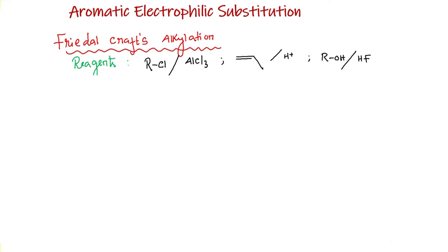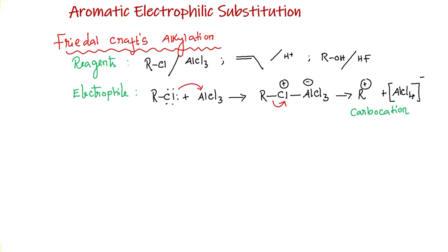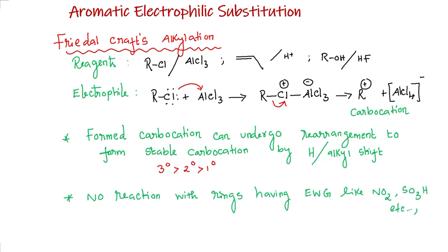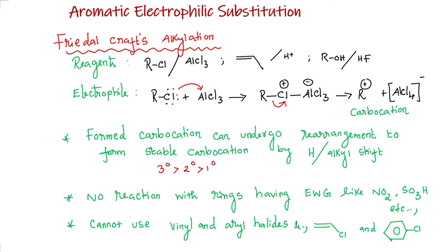For Friedel-Crafts alkylation, we generally use alkyl chlorides in the presence of anhydrous aluminum chloride. We can also perform alkylation using alkenes in the presence of acids, and alcohols in the presence of HF. All these reagents will form alkyl carbocations. When aluminum chloride reacts with alkyl chloride, it polarizes the R-Cl bond and forms a complex which dissociates to form the carbocation. The formed carbocation can undergo rearrangement to form a more stable carbocation by hydrogen or alkyl shift. The tertiary carbocation is more stable than secondary, which is more stable than primary. Friedel-Crafts reaction is not possible with benzenoid compounds having electron-withdrawing groups like NO2, SO3H, etc. We also cannot use vinyl halides or aryl halides as they form unstable carbocations.